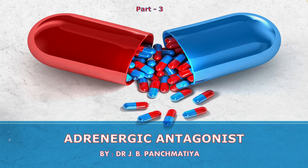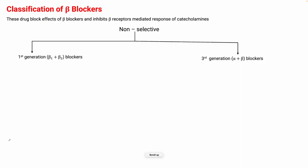So let's begin. First we will start with the classification of beta blockers. These drugs block the effects of beta receptors and inhibit beta receptor-mediated responses of catecholamines. Beta receptors are blocked by beta adrenergic antagonists.